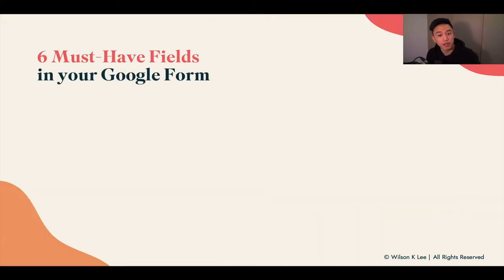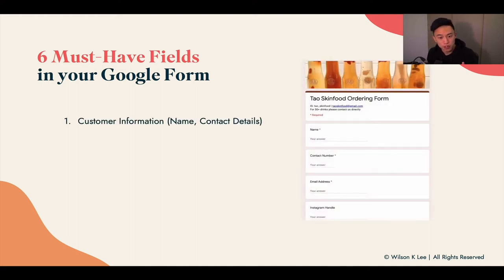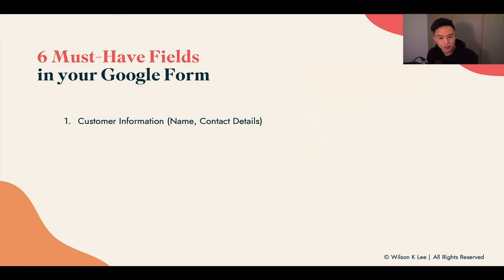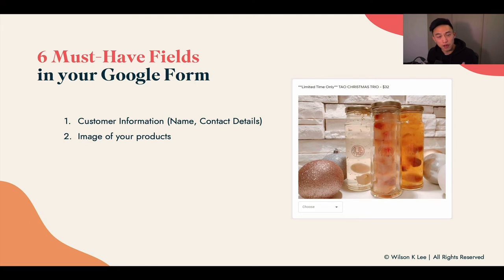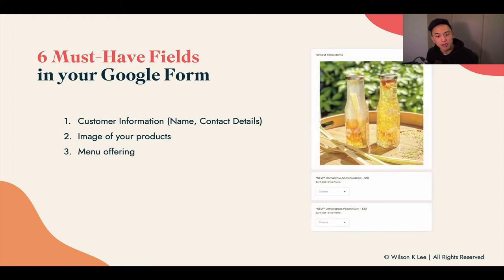Now, the six must-have fields in your Google Forms. These are the fixed six must-have items for your Google Form. First up, your customer information: their name, contact details, their number, and their address. Next up, images of your product — make sure you upload images so people are not mistaken on what they're ordering. Then, your menu offering: what is it that you're selling. Be very clear about all your different flavors and indicate them in your Google Form.